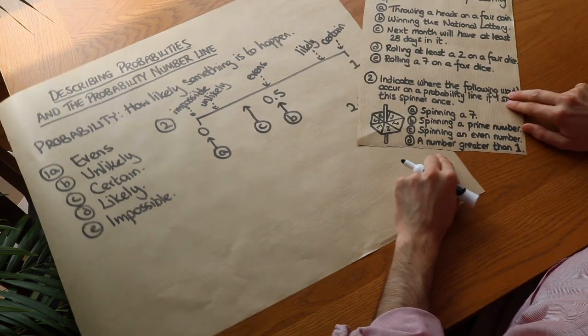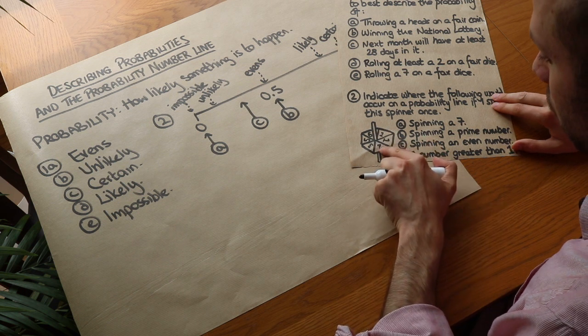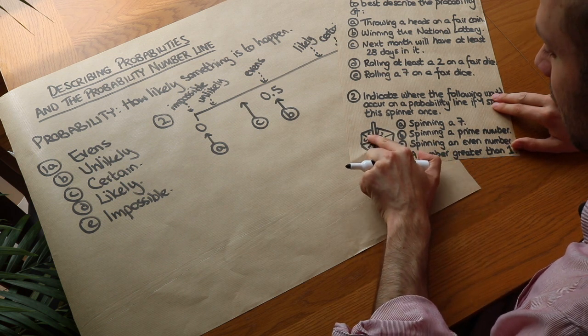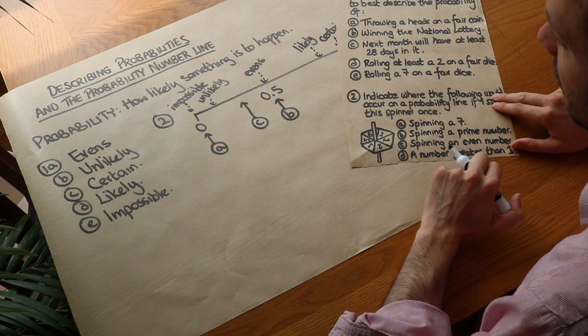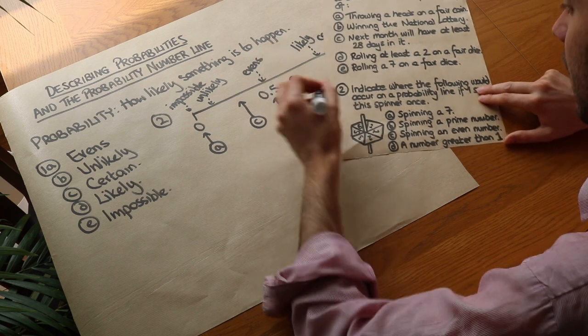And finally, we've got a number greater than 1. Now how many of these numbers are greater than 1? Well, the 2 is, the 3 is, the 5 is, and the 6 is. That's 4 out of the 6. That's more than half the time. So it's more than evens. And we're going to put it here. So D is going to go roughly here.